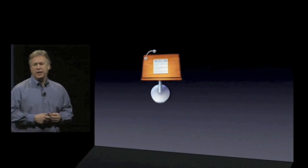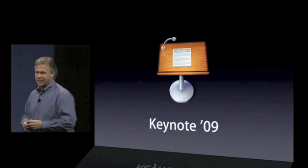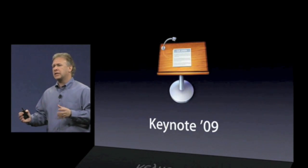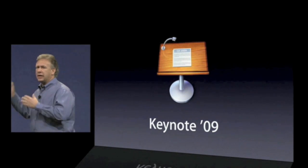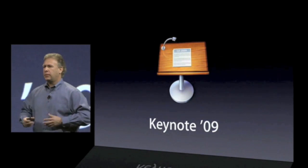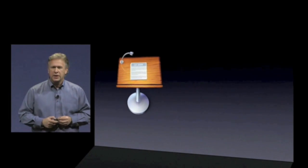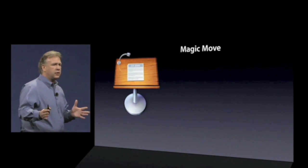First up, Keynote 09. It's what I'm using in this presentation, so you know it's rock solid. One of the things we focused on in Keynote 09 is giving you some really powerful animation tools that combined together can help you make incredible professional presentations, but really easily. First up, something we call Magic Move — a transition between slides where you set up your slides and Keynote does all the work to move your objects between the slides.